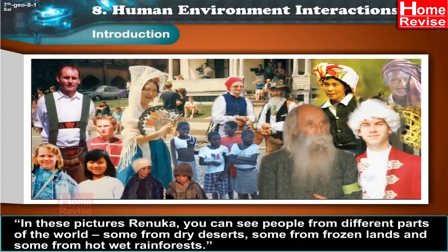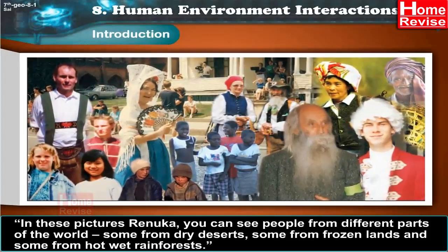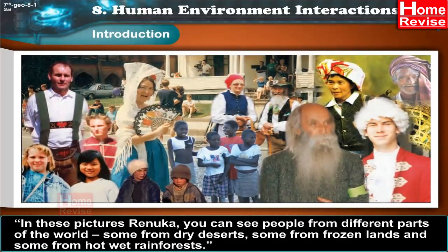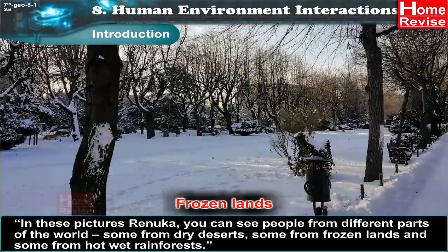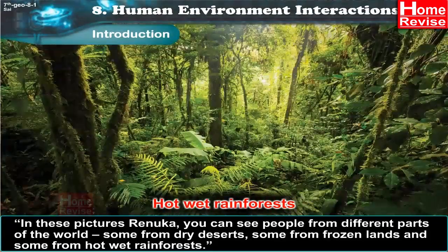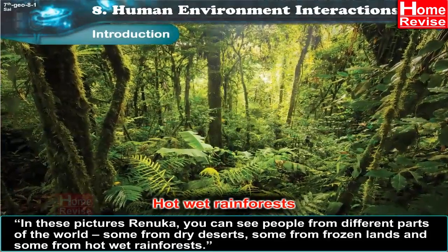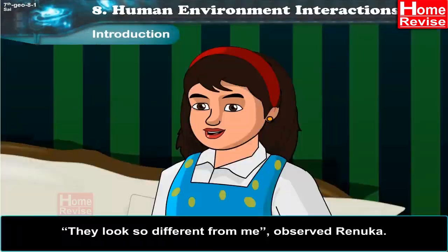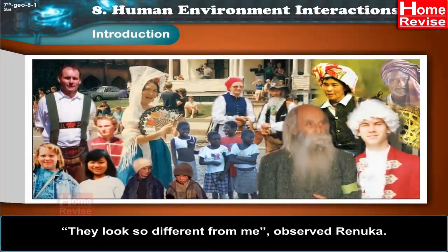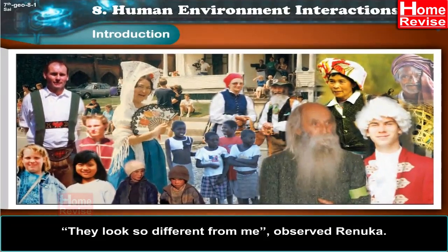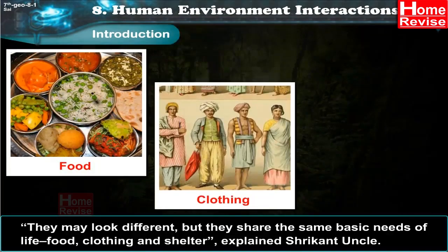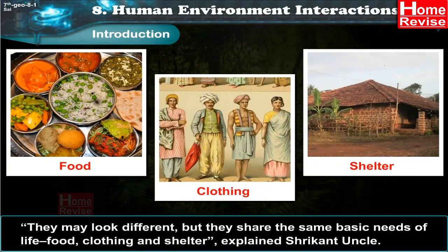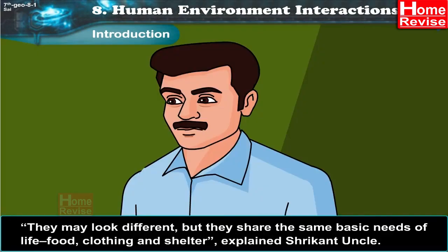In these pictures, Renuka, you can see people from different parts of the world — some from dry deserts, some from frozen lands, and some from hot wet rain forests. They look so different from me, observed Renuka. They may look different, but they share the same basic needs of life: food, clothing and shelter, explained Shrikant uncle.